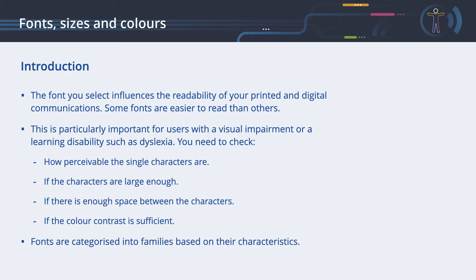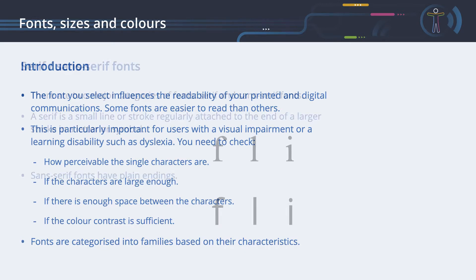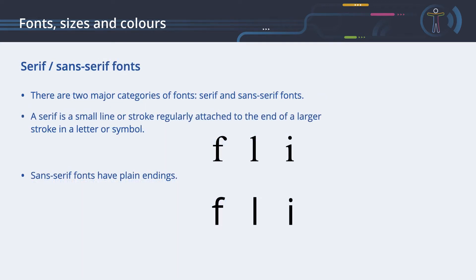Fonts are categorized into families based on their characteristics. There are two major categories: serif and sans serif fonts. A serif is a small line or stroke regularly attached to the end of a larger stroke in a letter or symbol. Notice how these characters have a small decorative line at the end of their lines — this decoration is called a serif. Typical serif fonts are Times New Roman and Georgia.